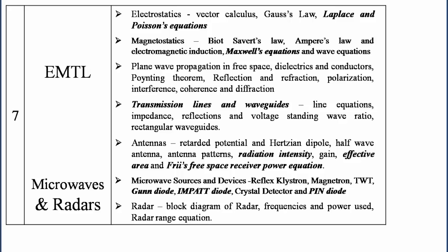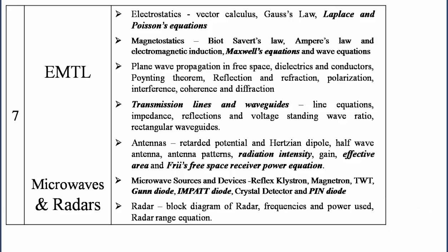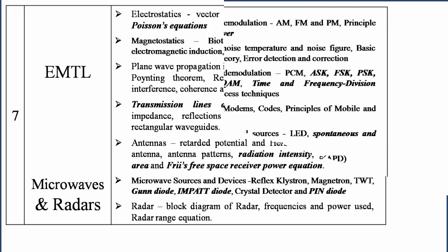For EMTL, the main equations are Poisson's equation and Laplace equation. Maxwell's equations are very very important — they can directly ask what is curl E, how curl H is expressed, how del dot D is expressed, or how del dot B is expressed.